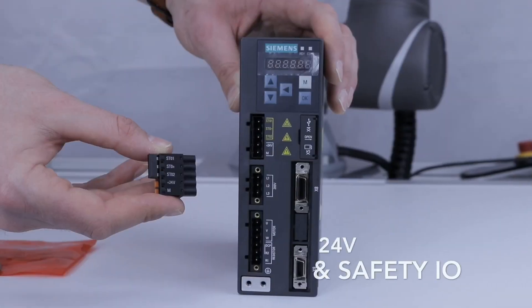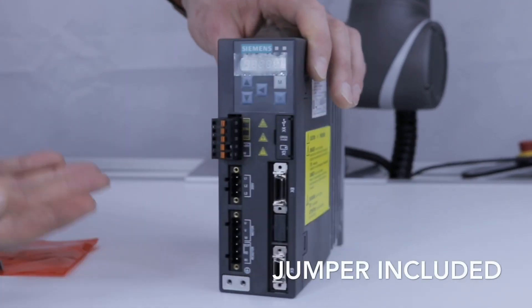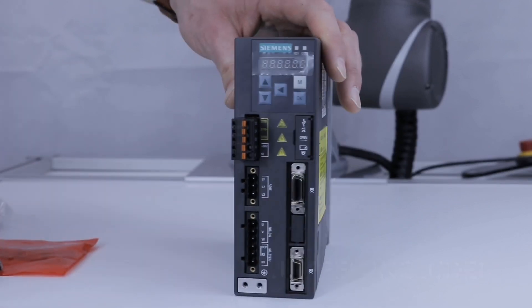There are three terminal connectors. The 24 volt and safe torque off provides 24 volts to the drive unit and the STO inputs are used to activate the safe torque off function in the drive. A jumper is included to disable this function by default.